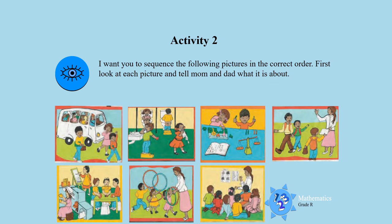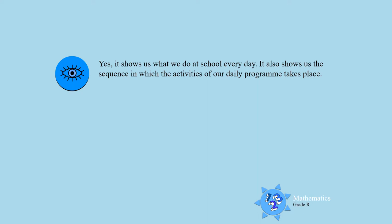Activity 2. I want you to sequence the following pictures in the correct order. First, look at each picture, tell mom and dad what it is about, and then put them in the order that you think it should happen in the Grade R class. So let's go everybody — let's see what happens at school every day.